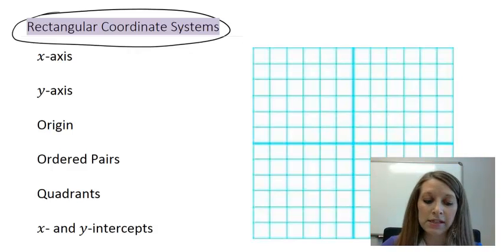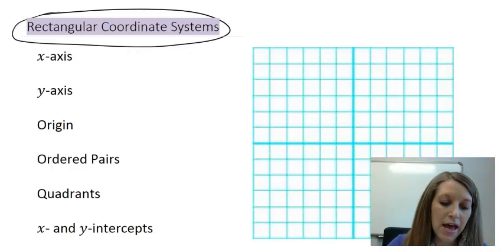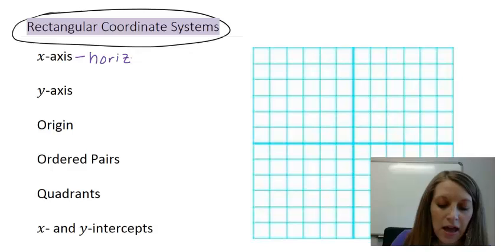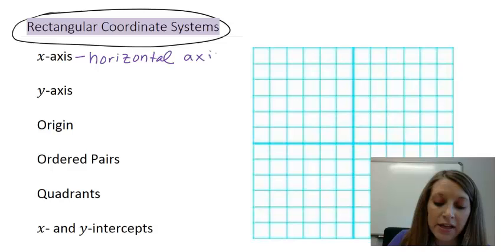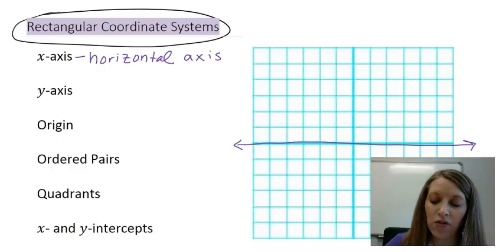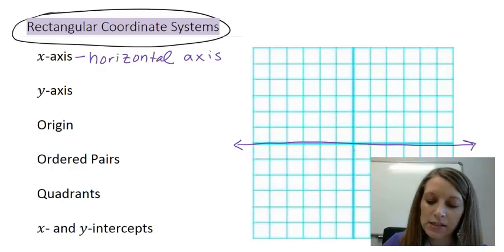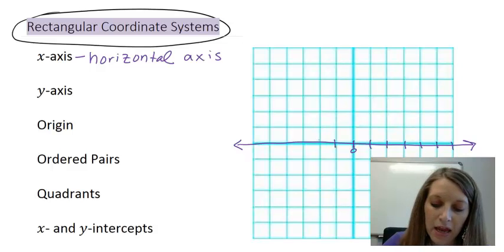We're going to start with the x-axis. The x-axis is the horizontal axis that everything is based off of. If you think of a number line, that is basically what your x-axis is. I'm going to draw it here in the middle. Your number line goes forever in both directions, just like your x-axis does. It starts in the middle at zero, and it has positive numbers on the right and negative numbers on the left.